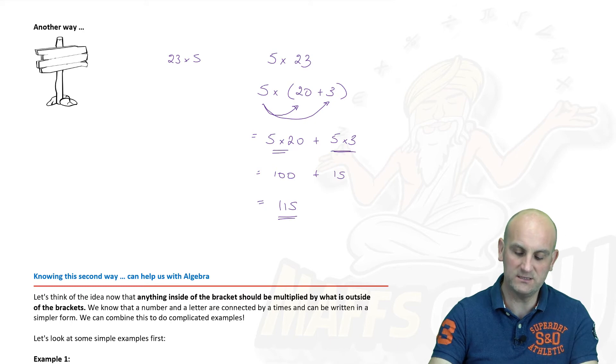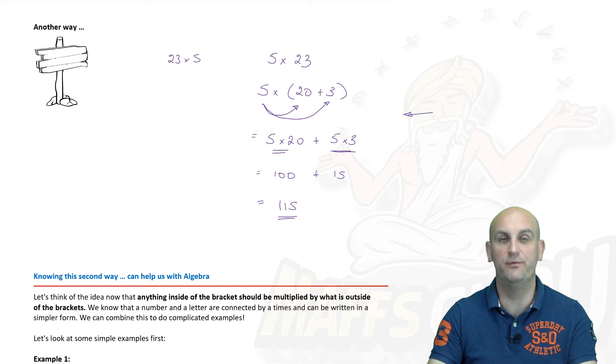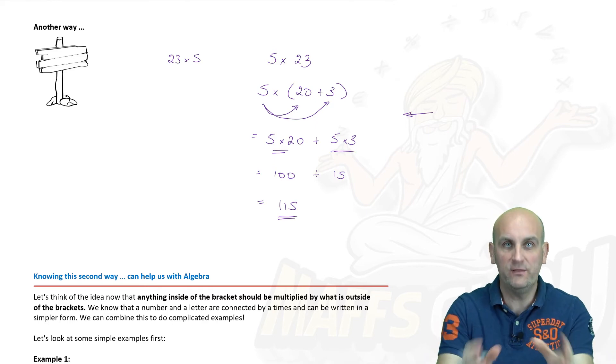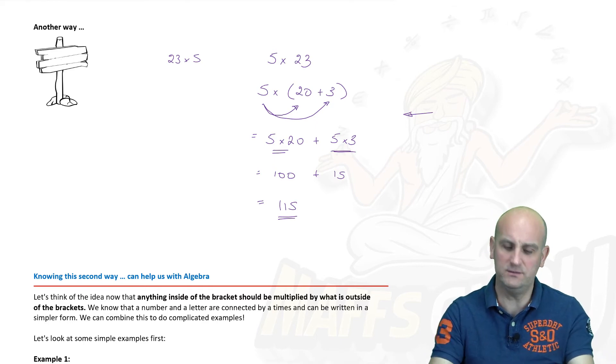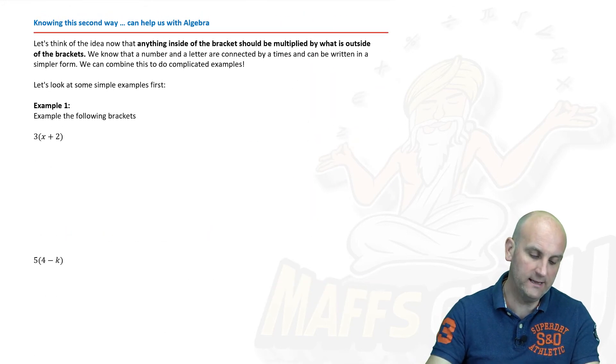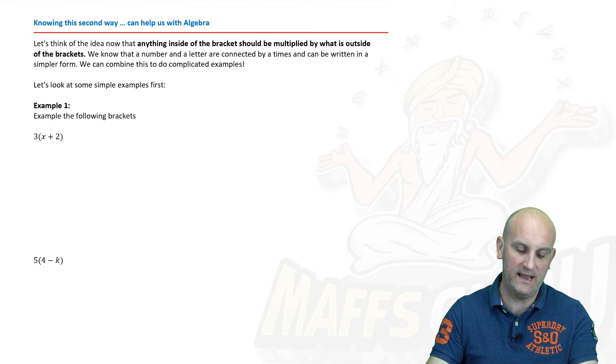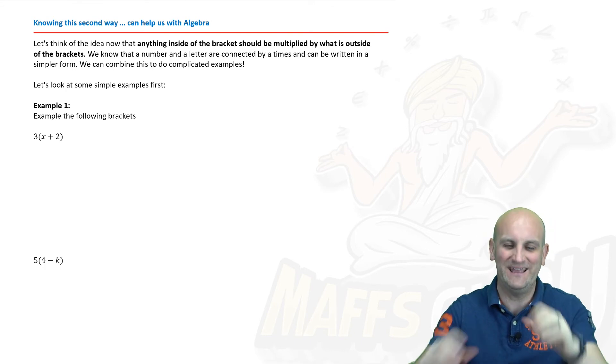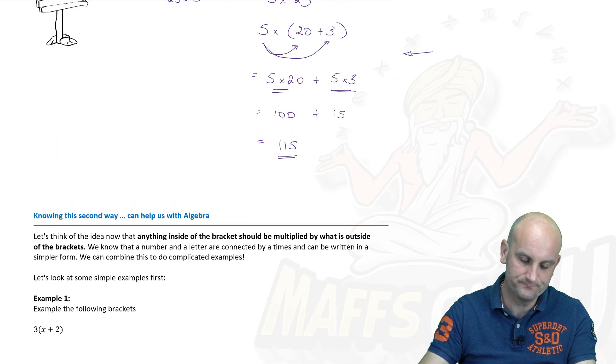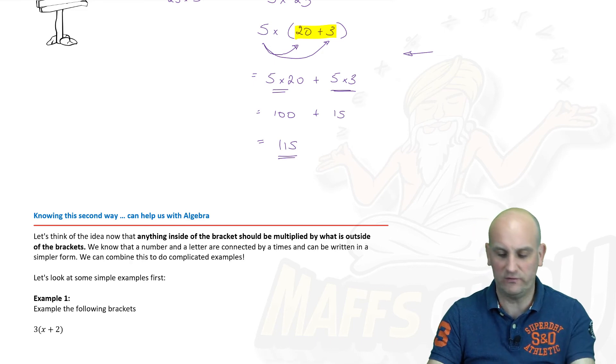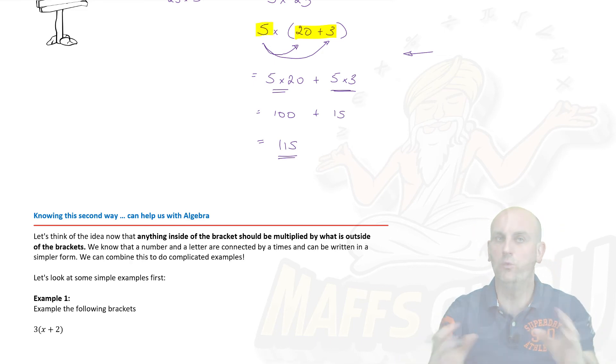Now I suppose I'm asking the question, would I actually do this longhand with numbers? Probably not. But knowing that it exists, knowing how to do it, helps me with algebra. All right, so let's have a look at this one. We think of the idea now that anything inside of the brackets, and if we think of that as anything inside my brackets, which we had here, is multiplied by what is outside my bracket, by that 5, then we have all the work we're going to need.